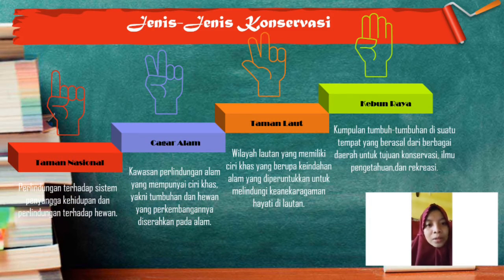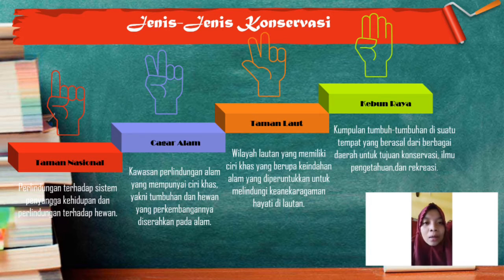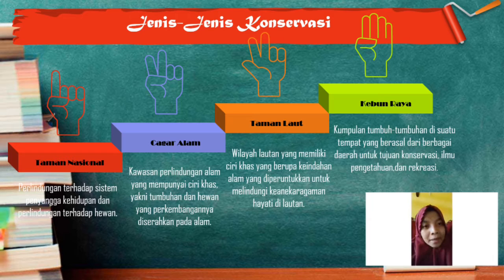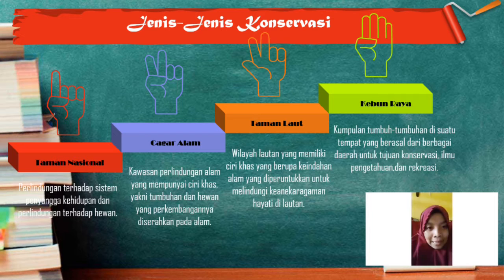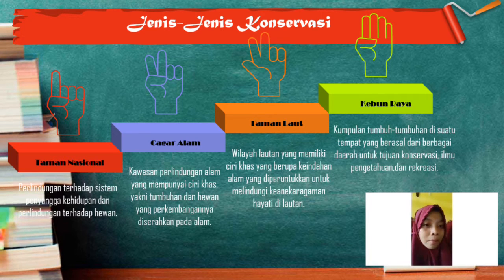There are four types of conservation areas. The first is the national park, which is used as a place for the protection of animals and plants, as well as for the development of science, education, recreation, and culture. Examples include Komodo National Park on Komodo Island and the Thousand Islands National Park.